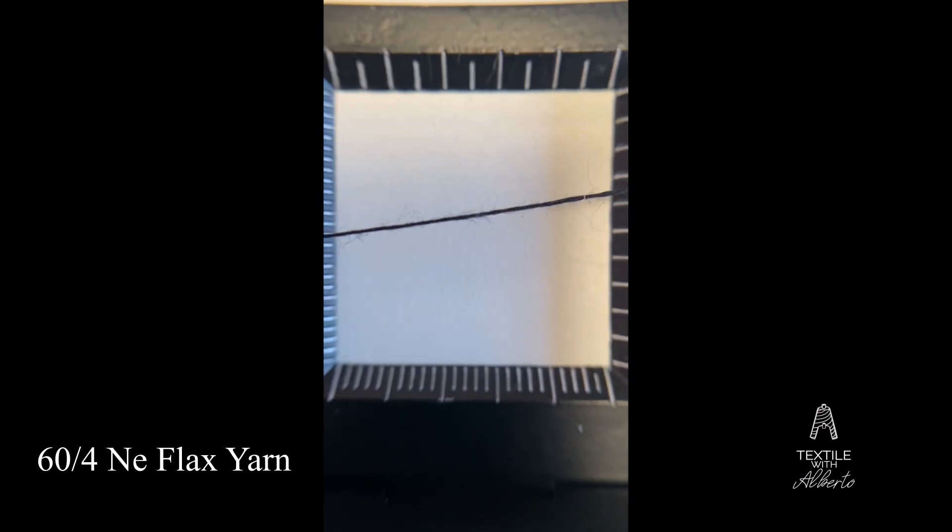The third yarn is a 6/4. It's still cotton but in this case we have four plies. Four plies of 60 and the finish, the final yarn count is 15. As you can see through the linen tester there are four plies that come out. The process is very simple. You have to rotate the yarn and pull.